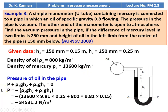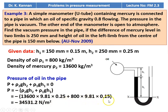Pressure of the oil in the pipeline — we write the pressure equation. In the left limb only the pressure is acting; on the right side there is no pressure acting above the XX reference point. P plus ρ₂gH₂ plus ρ₁gH₁ equals 0. Rearranging: P equals minus of (ρ₂gH₂ plus ρ₁gH₁), which gives minus of (13,600 × 9.81 × 0.25 plus 800 × 9.81 × 0.15) equals minus 34,531.2 newtons per meter square.